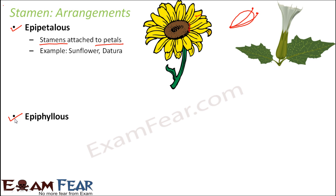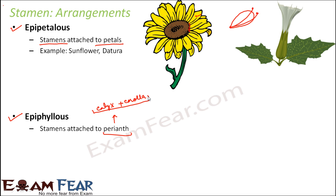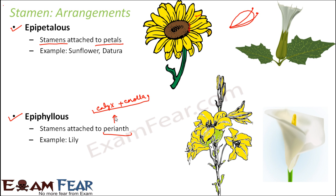The next arrangement is epiphyllous. Here instead of 'petalous' you have 'phyllous,' which means stamens attached to the perianth. Perianth is nothing but calyx plus corolla — that is, the sepals and petals together are known as perianth. In flowers where the stamens are attached not only to petals but also to the sepals — so stamens, petals, and sepals are all attached to each other — that is known as epiphyllous. An example is lily, where the stamens, petals, and sepals are all attached to each other.